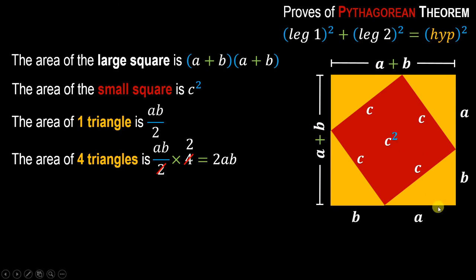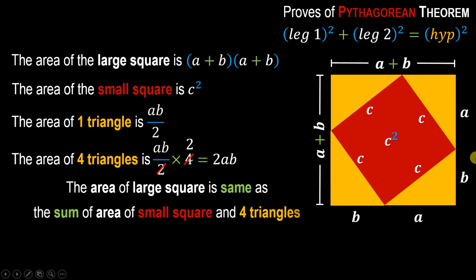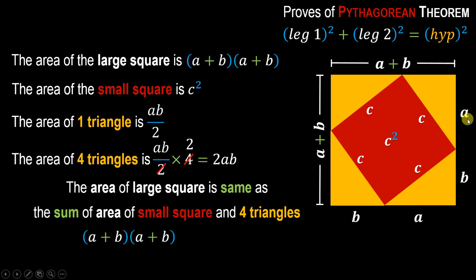Now, we have the area of the complete large square, the area of the small red square, and the area of the golden region. The key insight is: the area of the large square equals the area of the small red square plus the area of the four triangles (golden region), because those two parts together make up the entire large square.